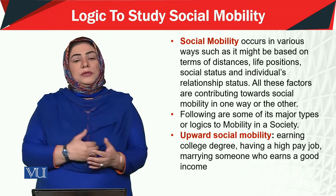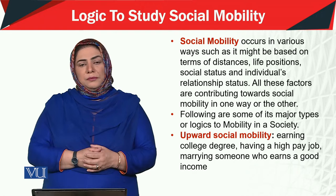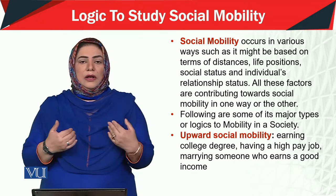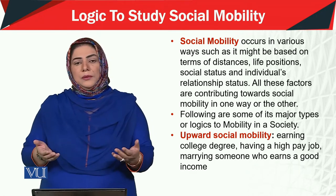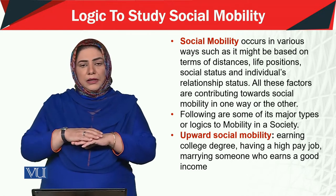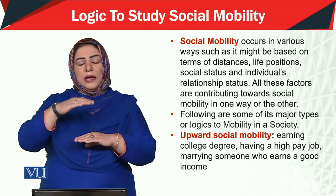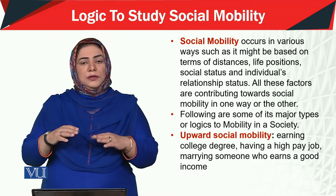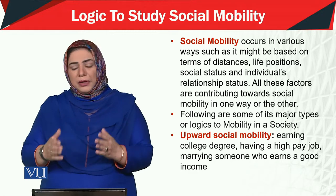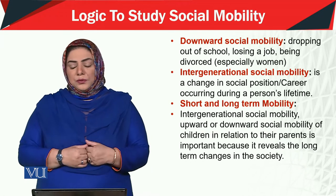Along with that, there are some social factors too. For example, a person belonging to the middle class — whether male or female — got married to someone whose income was very high, causing the family's status to change. All of these fall under the category of upward mobility.